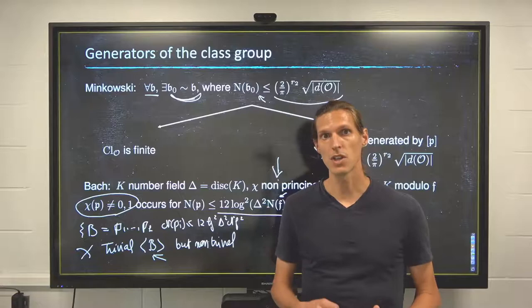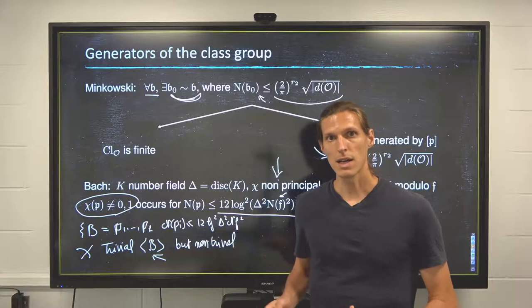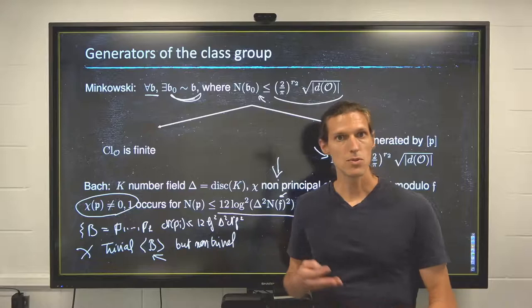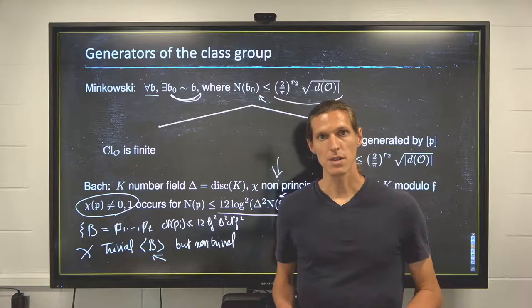So anything that has a better runtime than exponential usually relies, when it comes to non-trivial calculations in the class group, usually relies on that heuristic.